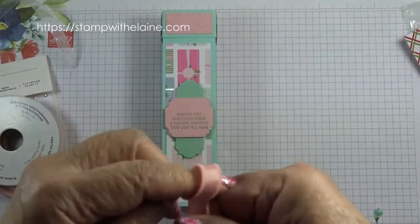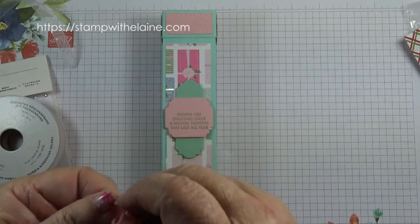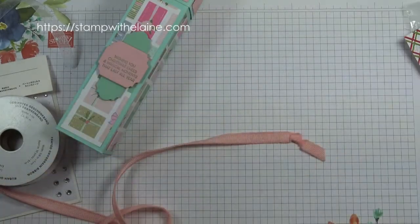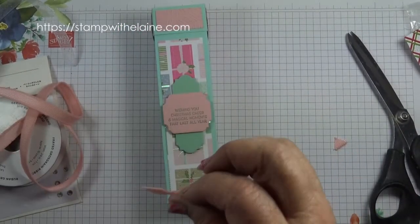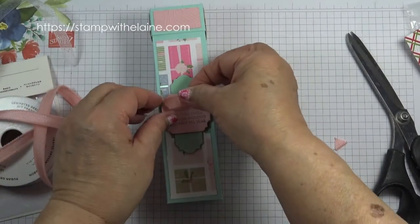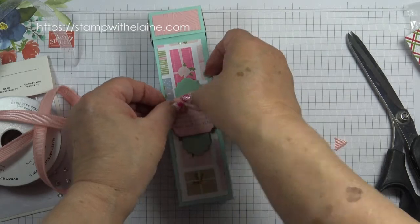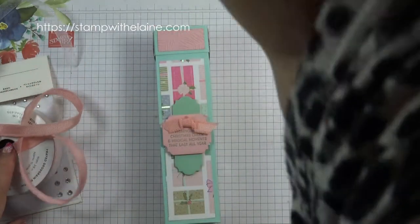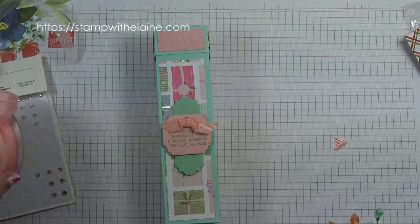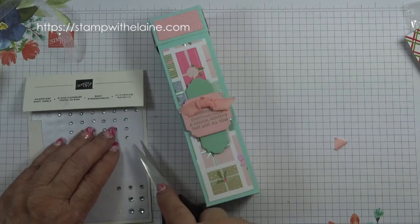Bring in the ribbon and tie a knot. Attach some glue dots on the ribbon and pop it over here in the middle. And then last thing to do is just some rhinestones.